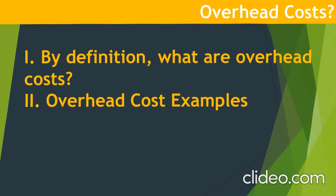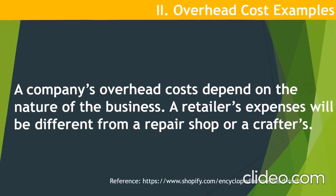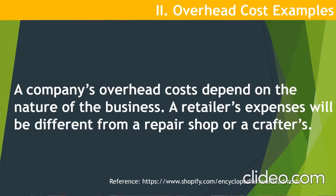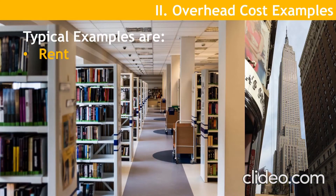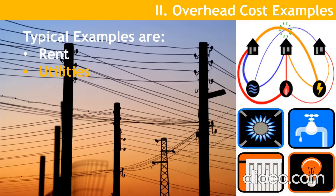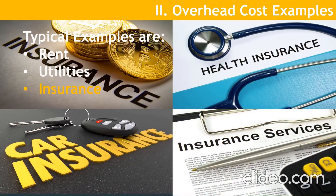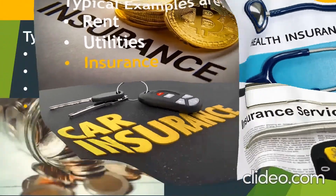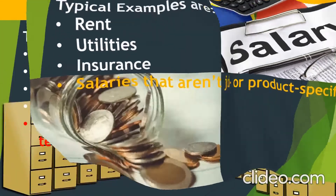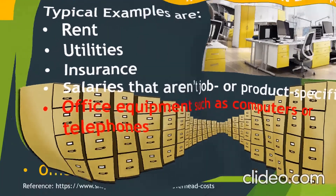A company's overhead costs depend on the nature of the business — a retailer's expenses will be different from a repair shop or a crafter's. Typical examples include: number one, rent — shown as buildings in the illustration; number two, utilities, which come every month; insurance, which comes every year; salaries that aren't job or product specific; office equipment such as computers or telephones; and office supplies.